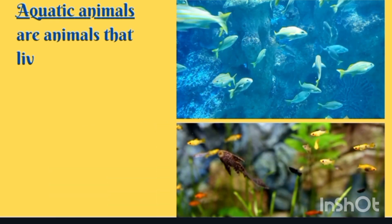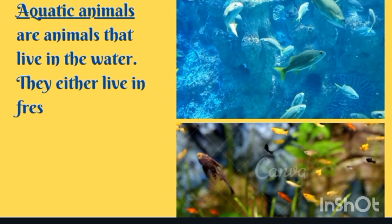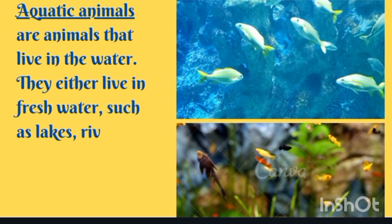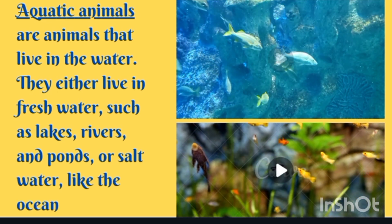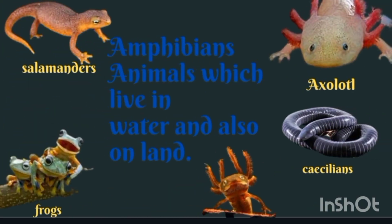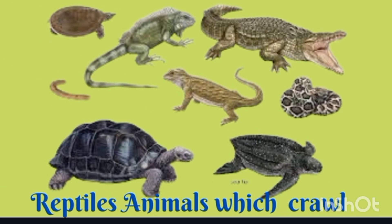Aquatic animals are animals that live in water — either in fresh water such as lakes, rivers, and ponds, or in salty water like oceans and seas. Amphibians are animals which live both in water and on land; salamanders and frogs are examples. Reptiles are animals that crawl on land — tortoise, crocodile, alligator, turtle, snake, and lizards are reptiles.